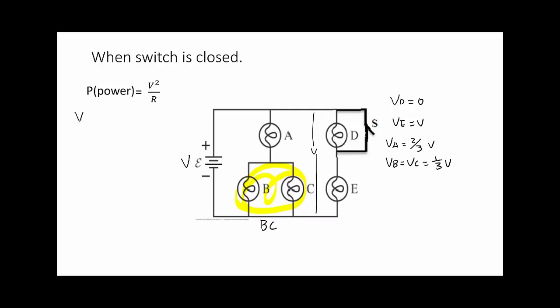So we can rank them now. VE is larger than VA larger than VB equals VC larger than VD. So when the switch is closed, E is brighter than A brighter than B equals C brighter than D.